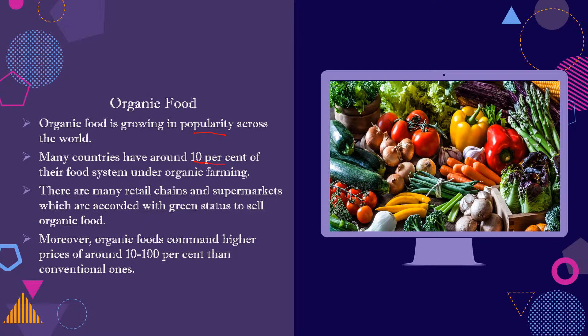Now we think about why it is just 10%. Because the organic food price is a little bit more than conventional — around 10 to 100% more than conventional. So because of the price, only 10% of the food system has been organic. There are many retail chains and supermarkets which have a green status, meaning they can buy organic food. If you don't have a green status, you cannot buy it because it could be harmful for you.